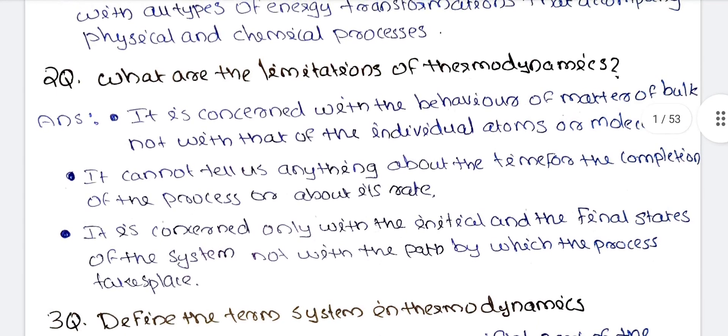The second limitation is that Thermodynamics cannot tell us anything about the time for the completion of a process, or about the rate of a reaction. The third limitation is that it is concerned only with the initial and final states of the system, not with the path by which the process takes place.